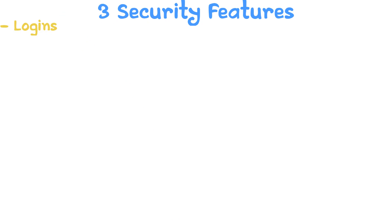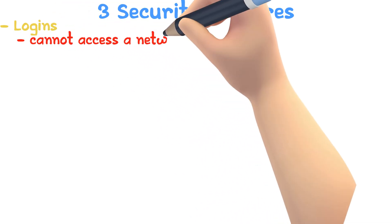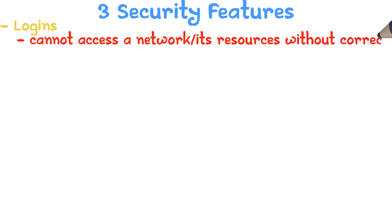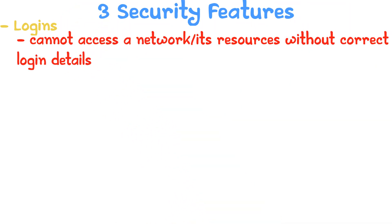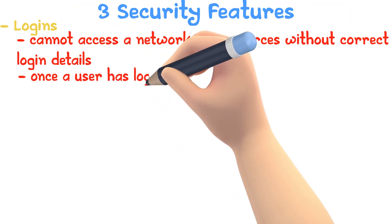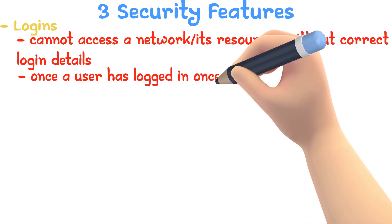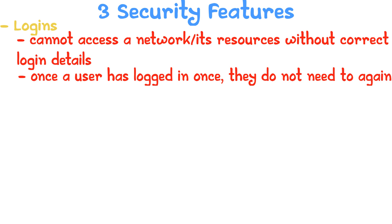Now let's take a look at three of the most common types of security in networks. Logins: users cannot access a network or its resources without the correct login details. Once the user has logged in once with their username and password, they do not have to login every time they access a resource.